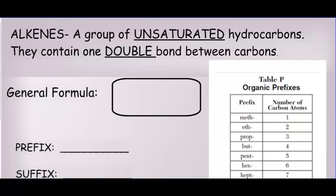Hi, everyone. Welcome back. This is Unit 13, Lesson 2, and we're going to talk about the other two series of hydrocarbons: the alkenes with an E and the alkynes with a Y.